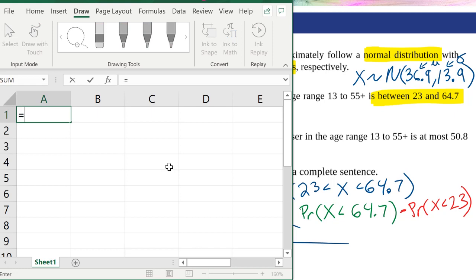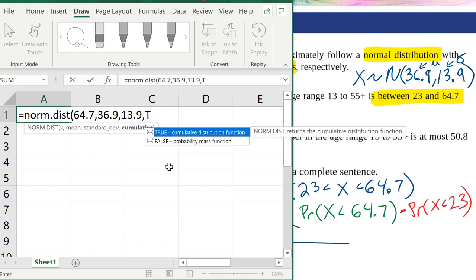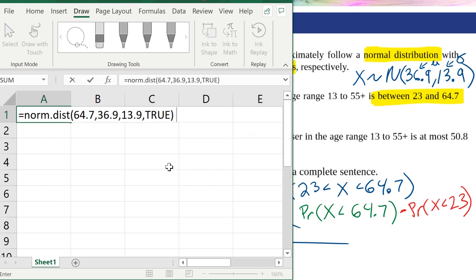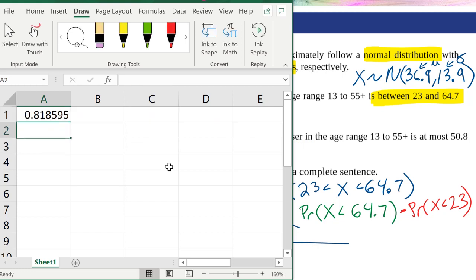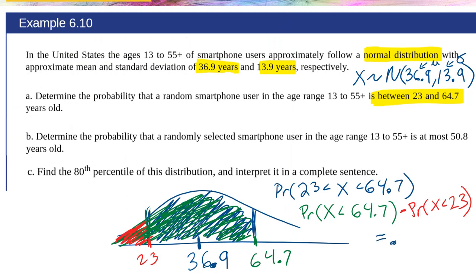I'm going to type equals norm.dist, open parentheses, start with 64.7. The mean of this distribution was 36.9. The standard deviation was 13.9. And always true for cumulative, true. Then write minus norm.dist, open parentheses. Now do 23. Same mean, 36.9, standard deviation 13.9, and always true. Now just press enter, and there you go. There's the probability. I can round that to 0.82. So this equals 0.82. That's my answer to part A.